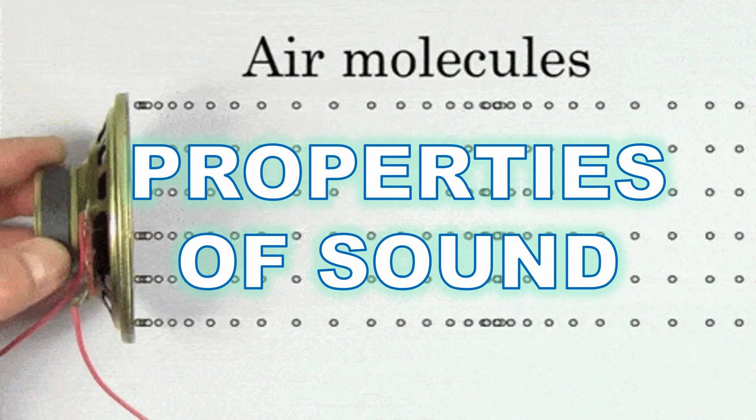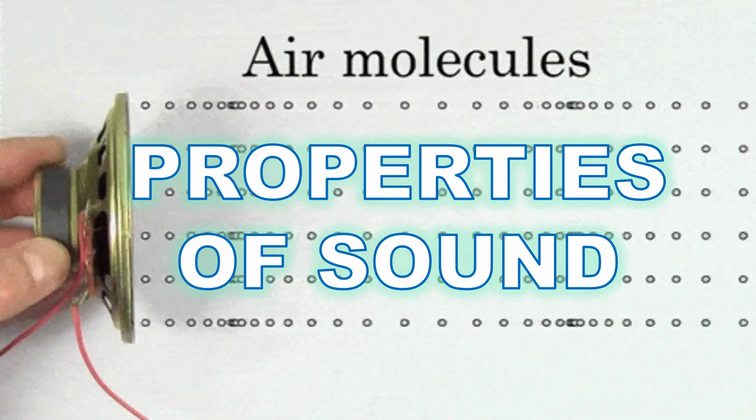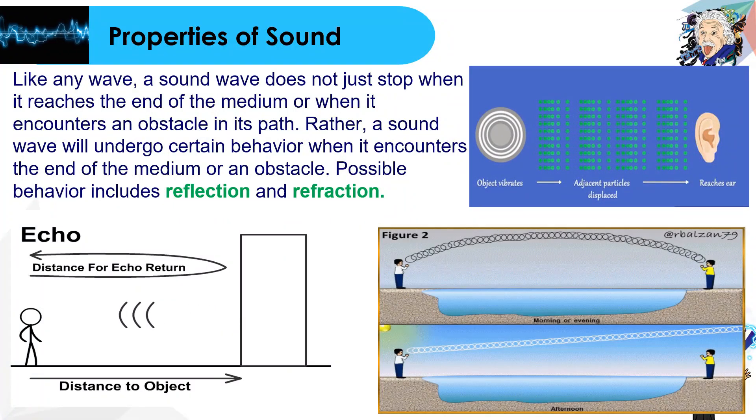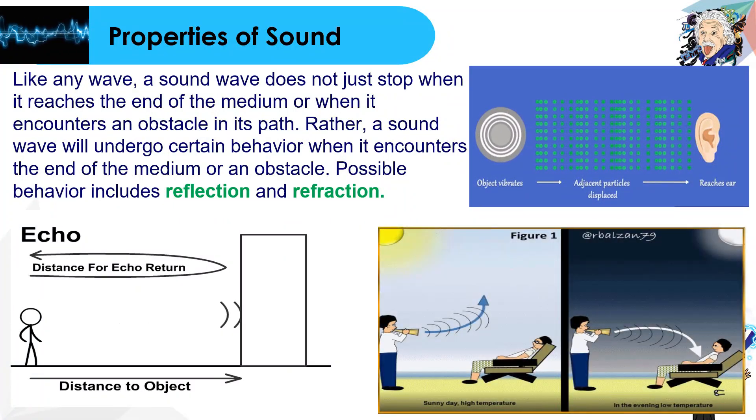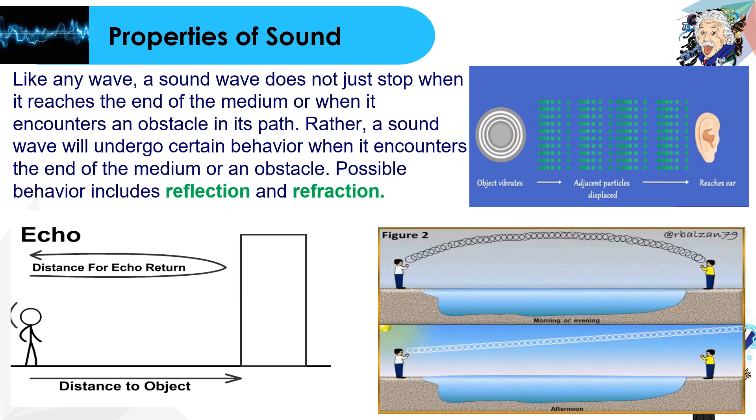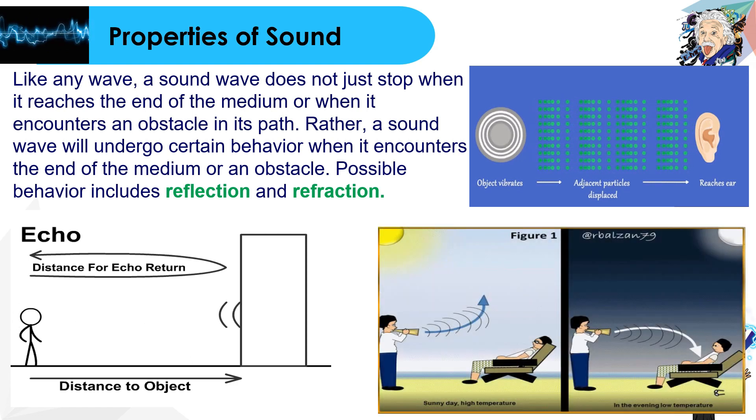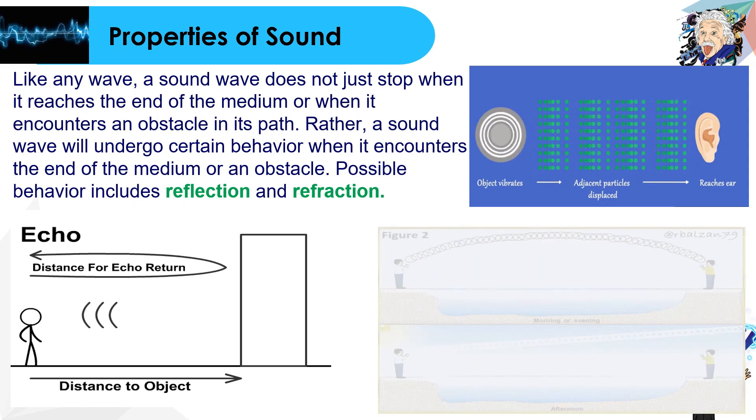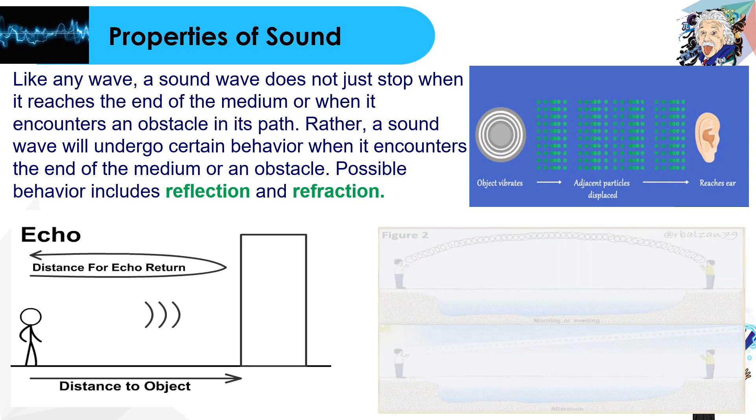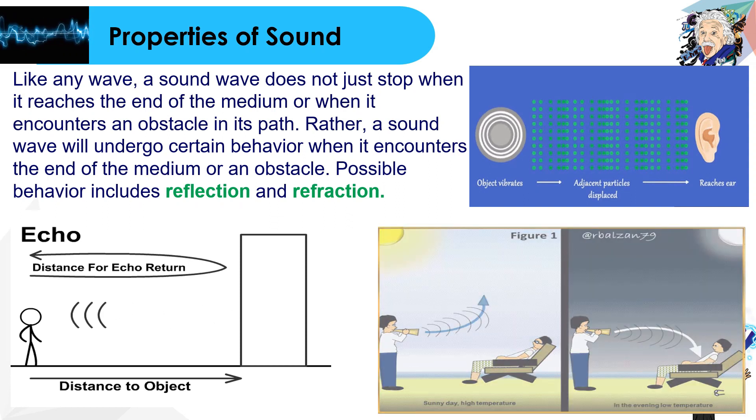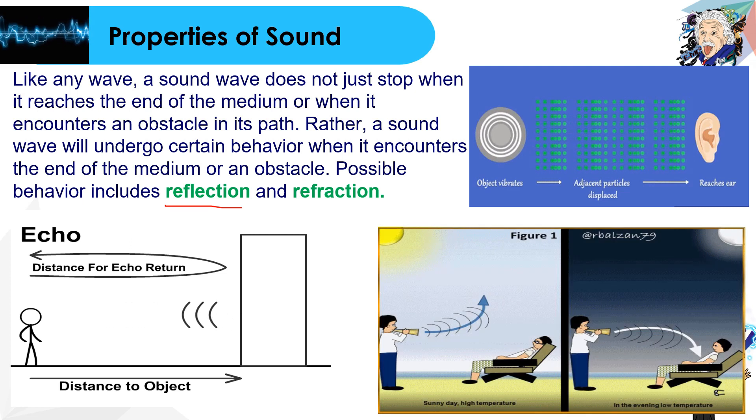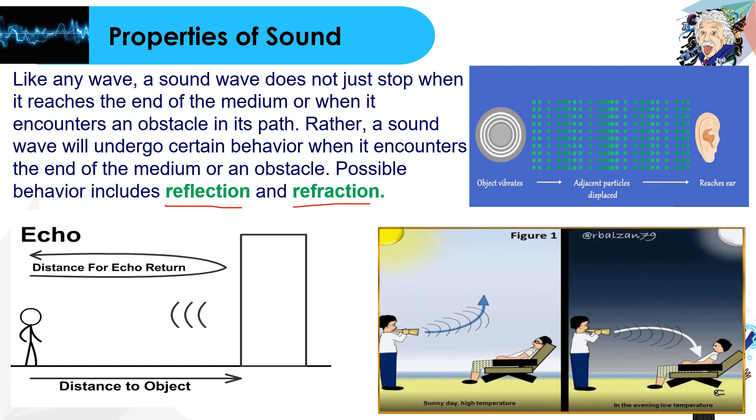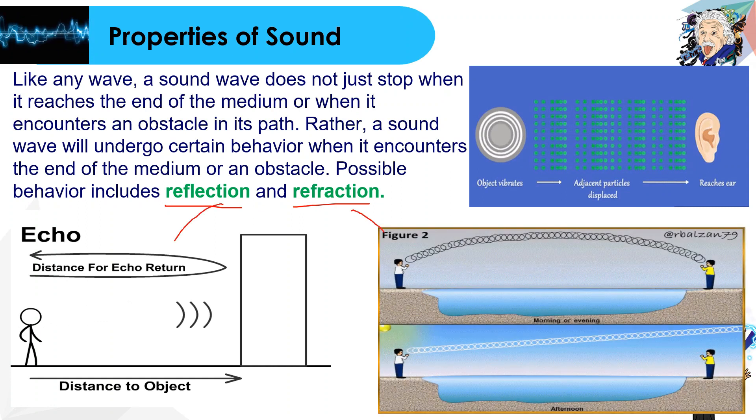At this juncture, we are now going to discuss the properties of sound. Earlier, we already know that sound travels like a wave, and just like any other wave, the sound wave does not just stop when it reaches the end of the medium or when it encounters an obstacle in its path. Rather, it will undergo a certain behavior. Either it would reflect or refract. Later on, we are going to try to differentiate the difference between reflection and refraction.